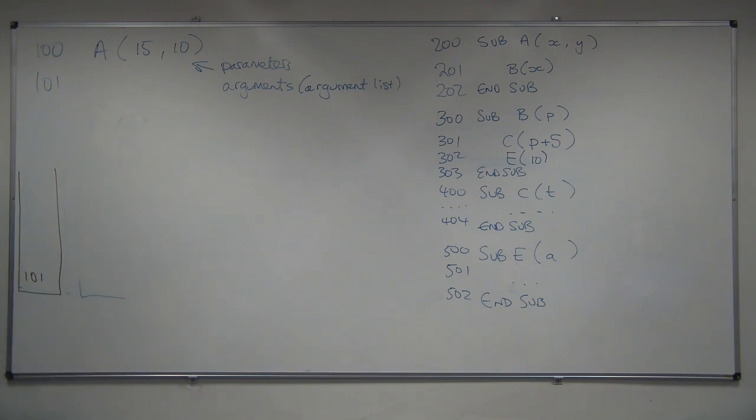Then we need to put the parameters on, in reverse order. So, we put the 10, and we put the 15. Then, we can go off, and we can execute the code for subroutine N, which is at line 200.